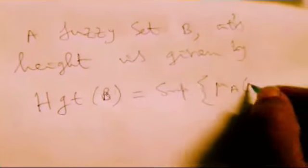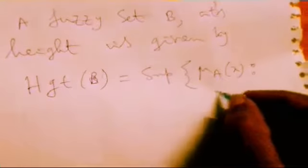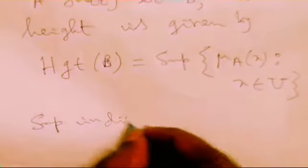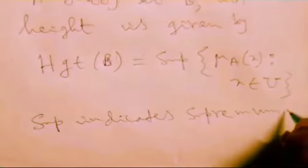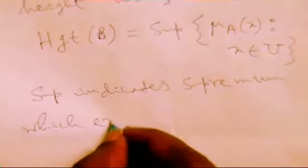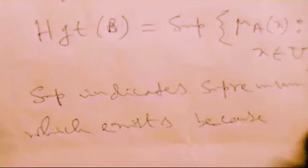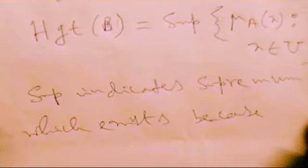Let's take the supremum of mu_A(x) — that's the notation we already discussed — as x belonging to U. The sup indicates supremum, which exists because of upper bound cases.